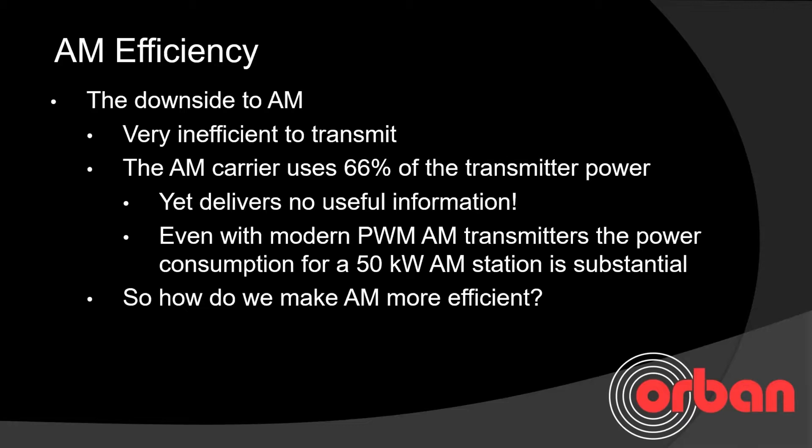The downside to amplitude modulation is that it's very inefficient to transmit. The AM carrier uses 66 percent of the transmitter power yet delivers no useful information. Even with modern pulse width modulated AM transmitters, the power consumption for a 50 kilowatt AM station is substantial.